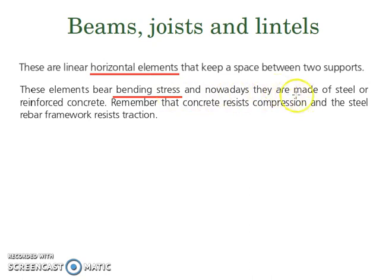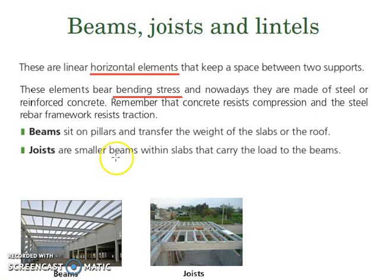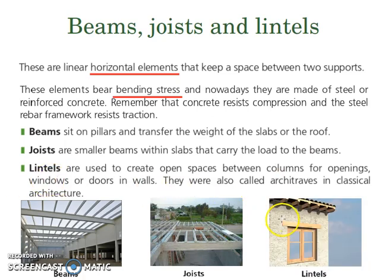Nowadays they are made of steel — acero — or reinforced concrete. Beams are the main horizontal elements. Joists are smaller beams within slabs that carry the load to the beams. And lintels are used to create open spaces between columns for openings, windows or doors in walls. All of them are horizontal elements subjected to bending stress.